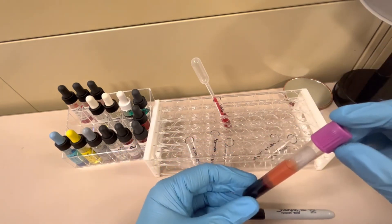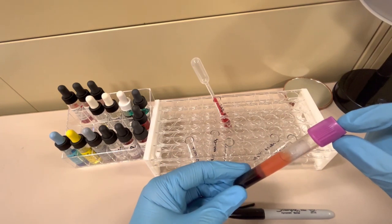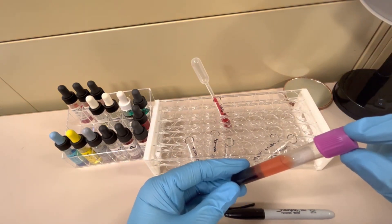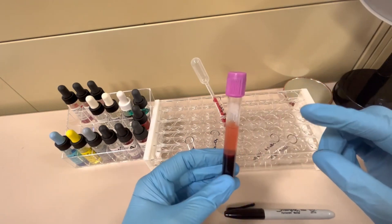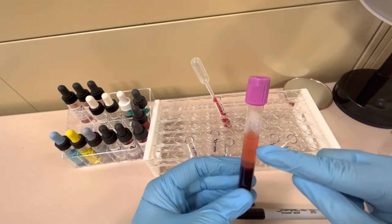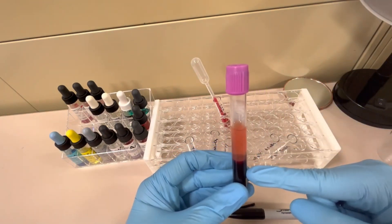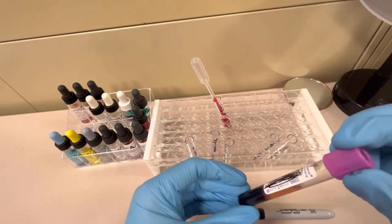For blood typing, you can use purple tops or pink tops. Either is fine. This one is properly centrifuged, so the plasma is up here on the top and the red blood cells are down here on the bottom, and of course it's properly labeled.